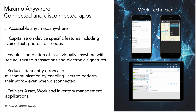Let's start with our Maximo Anywhere overview. Maximo Anywhere has a tremendous feature set, and just a small portion of these features are shown here on the slide. For example, Maximo Anywhere provides you a connected and disconnected application so your users can access critical information anytime and any place. Anywhere capitalizes on device-specific features, including voice-to-text, photos, and barcodes.